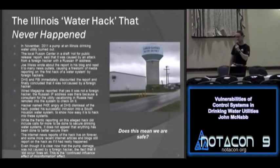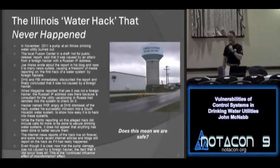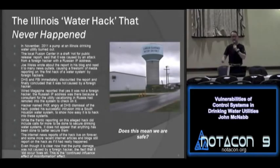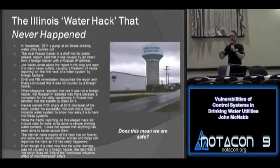We all remember the news last November about the Russian hacker who burned out a pump at an Illinois water district, which they mistakenly said was Springfield — it was actually Curran Gardner. A lot of the news reports were wrong. The story was half right: a pump burned out, but we never really got an explanation of why, except that pumps burn out. That just sort of happens. So if you get a cyber attack, how do you really know what caused it?